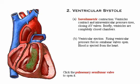The ventricular ejection phase begins when rising ventricular pressure forces the semilunar valves open. Blood is then ejected from the heart into the pulmonary trunk and aorta.